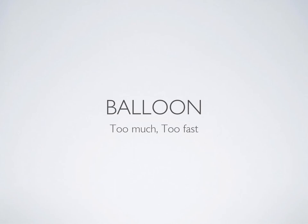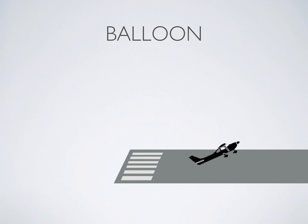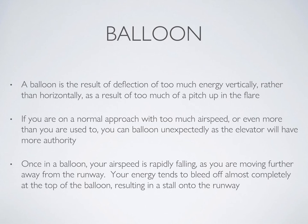Now let's talk about ballooning — everybody balloons at some point. Simply put, it's too much or too fast, or both. A balloon is when during the flare the airplane starts to climb back up and balloon away from the runway. Since this tends to eat up most of the remaining energy, the airplane will likely stall and drop down onto the runway if no corrective action is taken. Too much energy is diverted vertically rather than horizontally, usually as a result of too much pitch in the flare. If on a normal approach with too much airspeed, you can balloon unexpectedly as the elevator will have more authority at that higher airspeed.